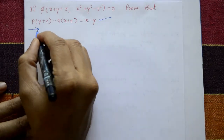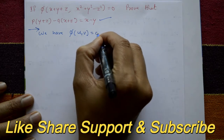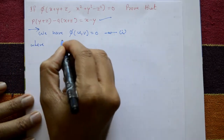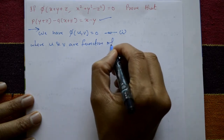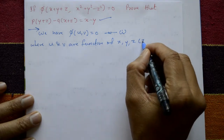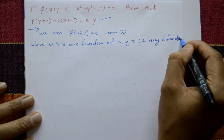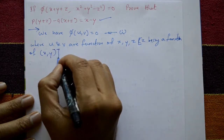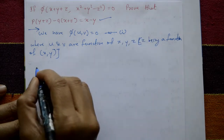We have φ(u, v) = 0 — call this equation number one. Here u and v are functions of x, y, and z, and z is a function of x and y.